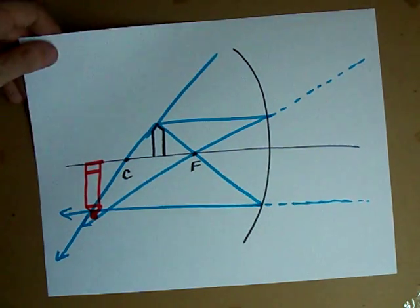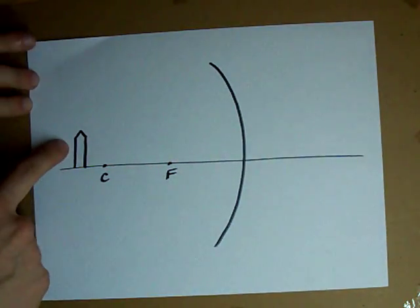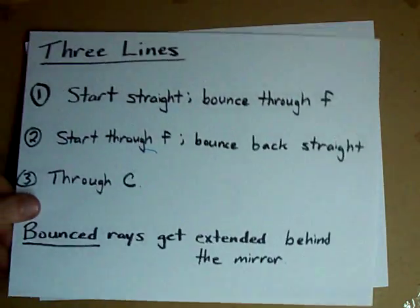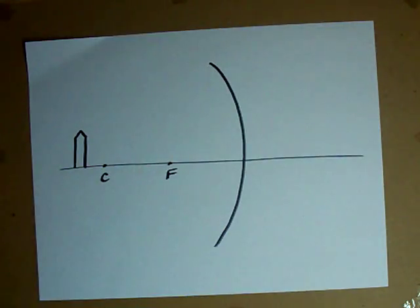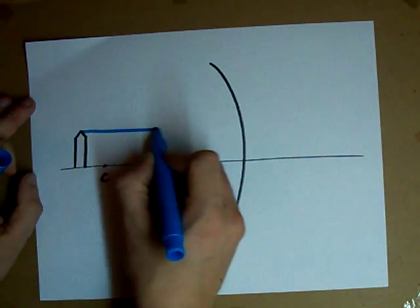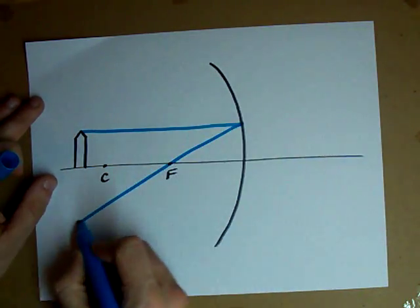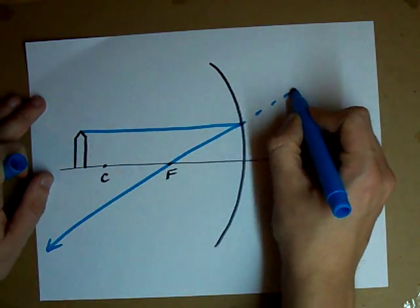Let's try this again. Except this time, the object is beyond C. Three lines. Start straight, bounce through F. Start out straight, bounce through F. Extend that backwards.